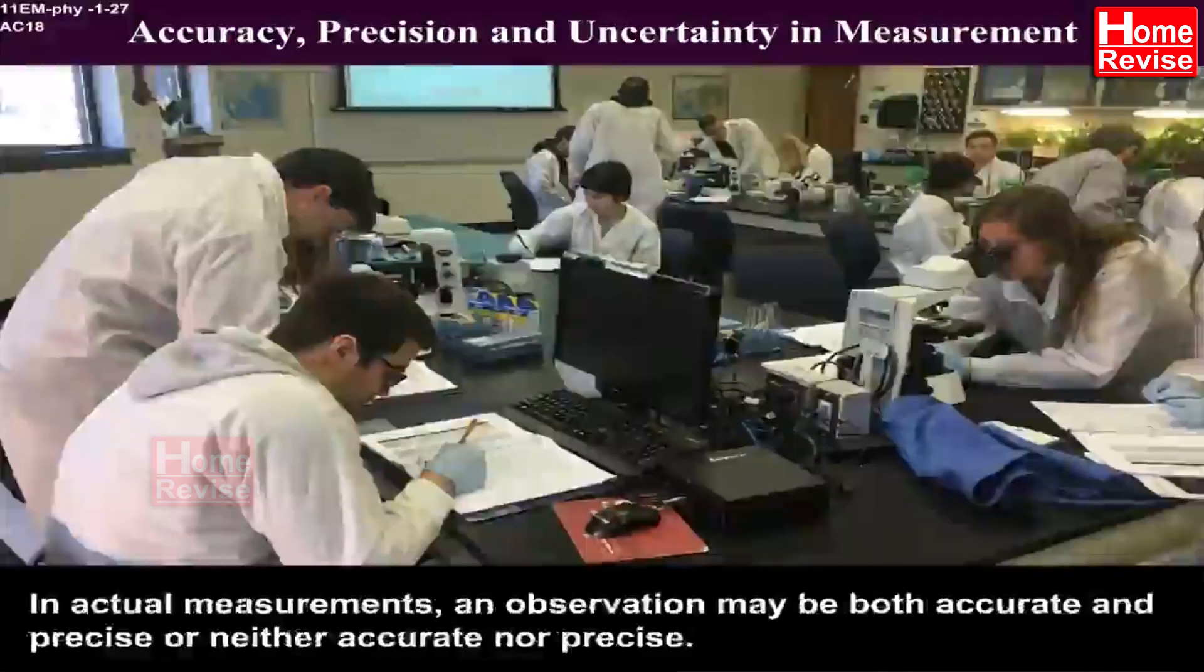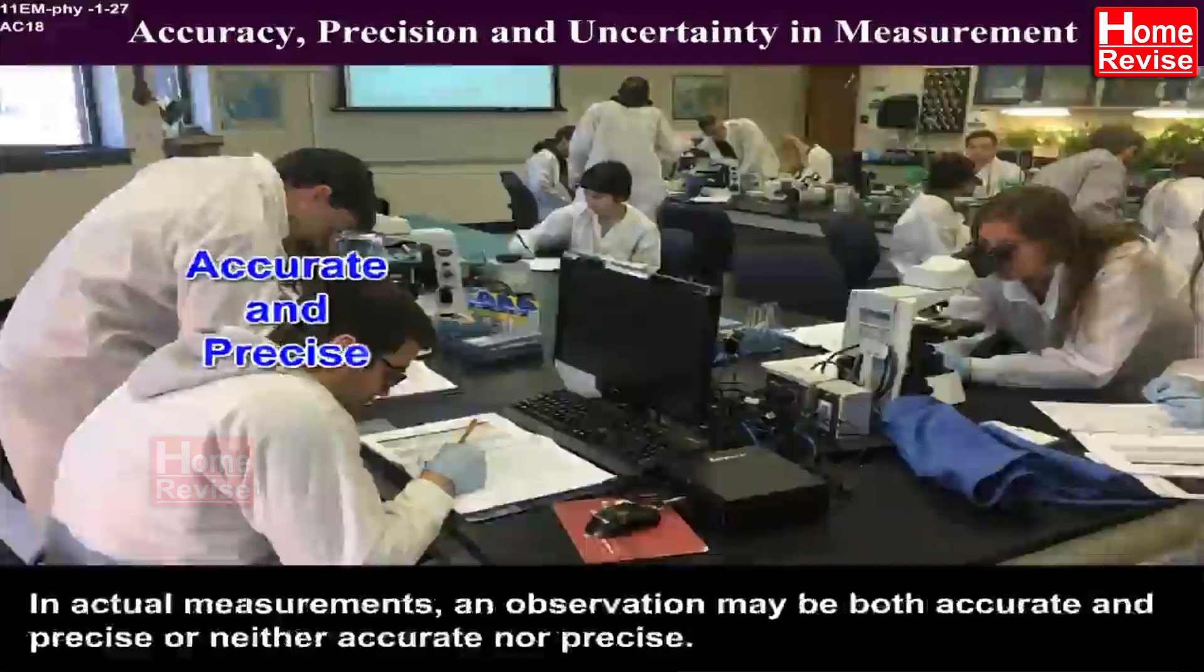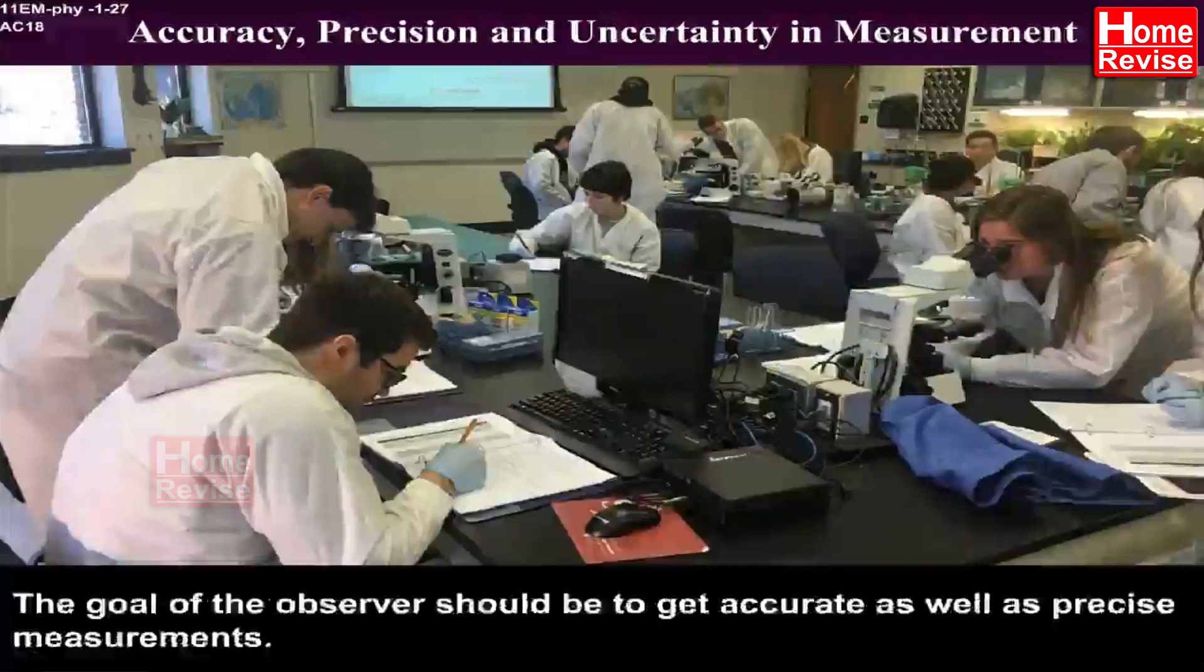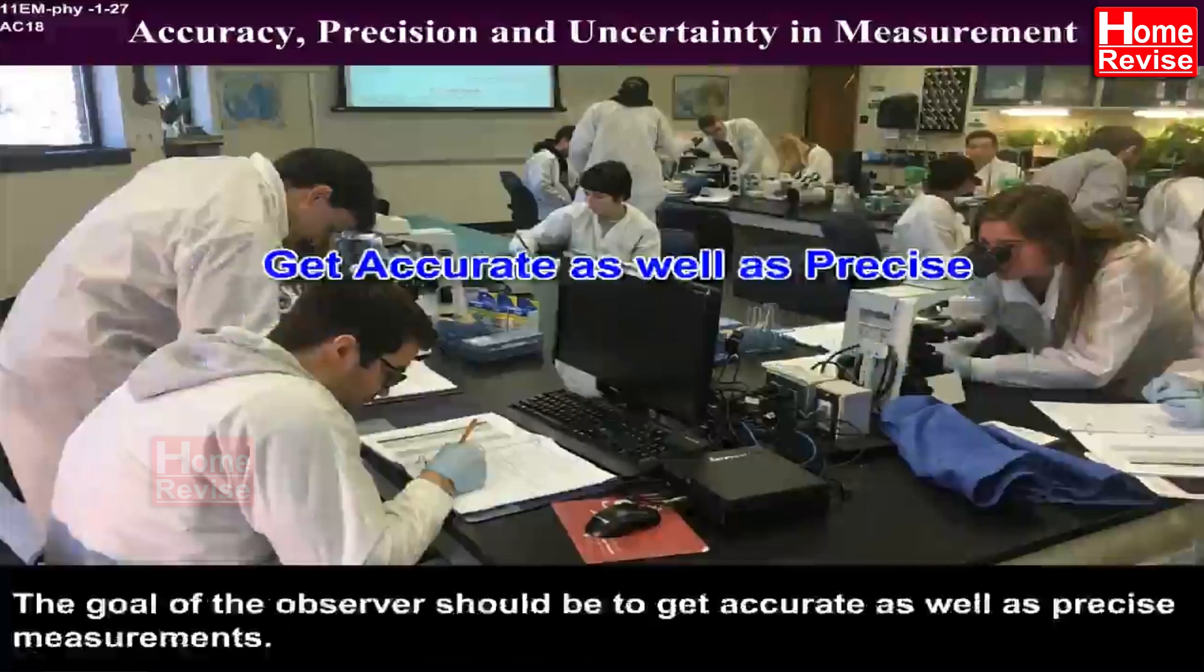In actual measurements, an observation may be both accurate and precise, or neither accurate nor precise. The goal of the observer should be to get accurate as well as precise measurements.